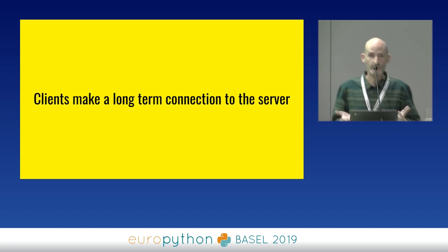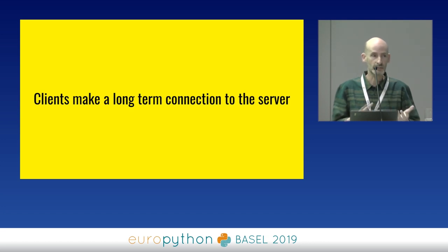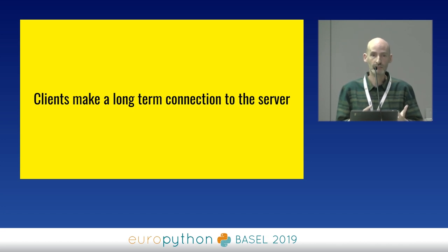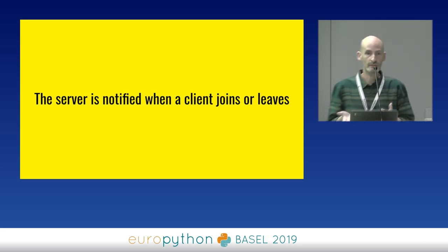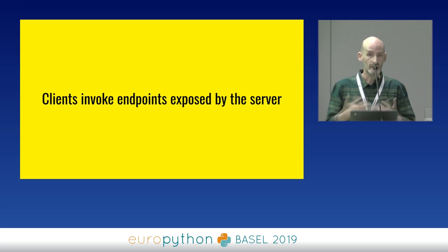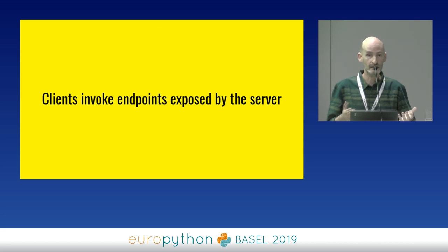Pretty much it works like this: the client connects to the server, and unlike with HTTP and REST, it's a permanent connection — it doesn't end, it stays connected. Each time a client joins or leaves, the server detects that and gives your application a chance to do something about it. Since the client is connected at any time, it can invoke an endpoint in the server — the server exposes an API that the client can use.